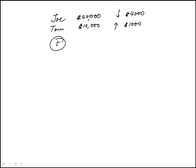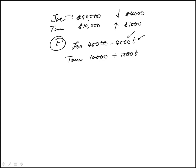After T years, Joe's investment value would be 40,000 minus 4,000T — it decreases by $4,000 per year, so we multiply by the number of years. Tom's investment value would be 10,000 plus 1,000T, since it's going up by $1,000 per year. We want these two values to be equal, which is the condition given to us.